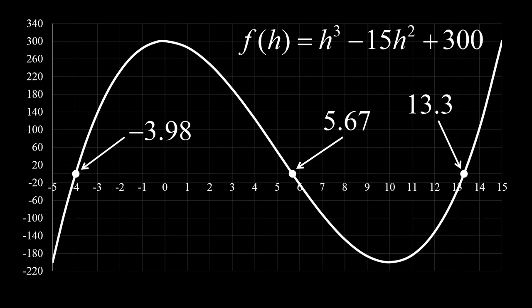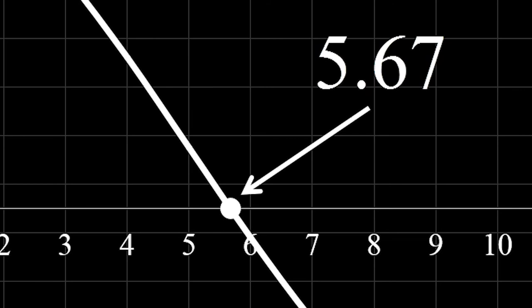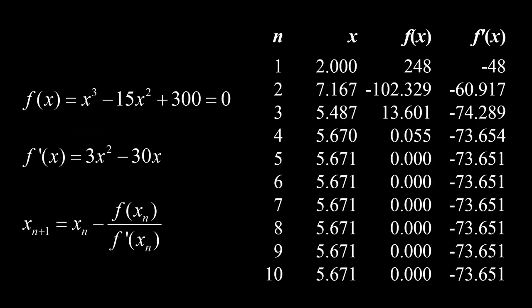Paano natin ito makukuha using the Newton-Raphson method? Ang function ay x cubed minus 15x squared plus 300, kaya ang derivative ay 3x squared minus 30x. Pwedeng gawin ang computation sa isang spreadsheet program. Kung 2 ang una nating hula in just 4 iterations, makukuha na natin ang sagot na 5.67 centimeters.